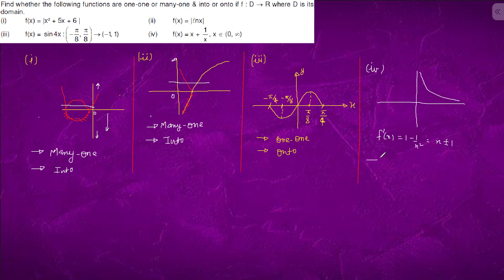So this is one one. And when we have to say onto, so x will be zero to infinity and our range is from minus infinity to infinity. So this is our solution.